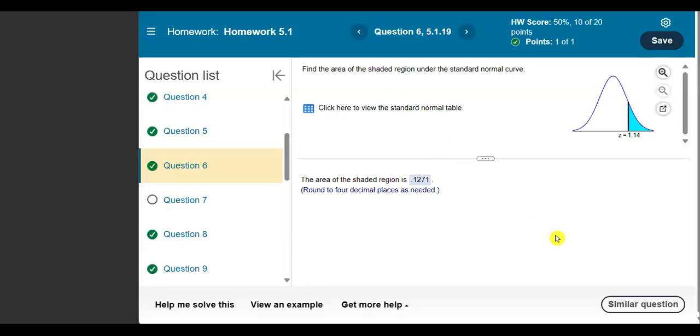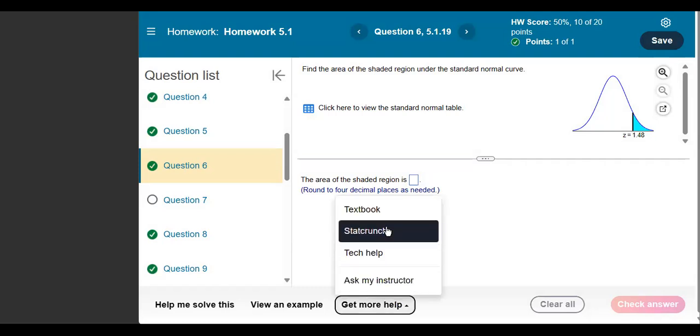In this video, we're going to use StatCrunch to practice finding areas given z-scores. Let me click on a similar question here. I'm going to get more help. Open StatCrunch.